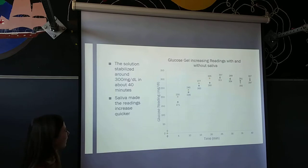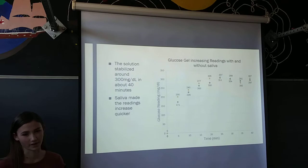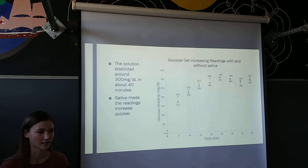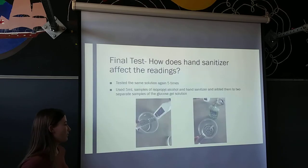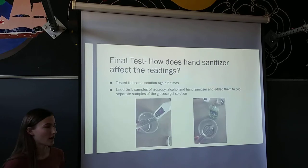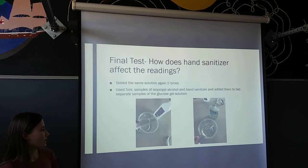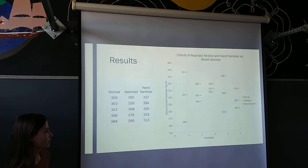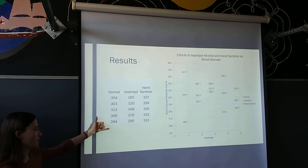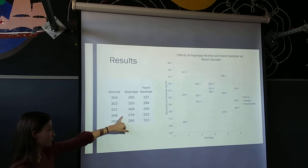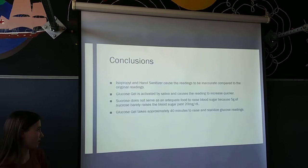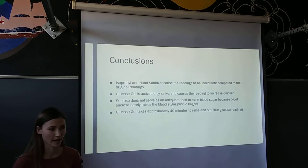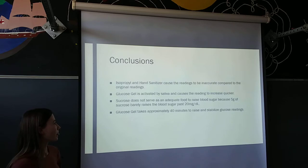You can see that at around 40 minutes the sugar readings stabilized around 300 milligrams per deciliter. I was able to use that 300 baseline to then look for a pattern with hand sanitizer. I added one sample of isopropyl alcohol and one sample of hand sanitizer to two of the same prepared solutions of glucose gel and water. The normal readings remained around that 300 baseline, while the isopropyl alcohol and the hand sanitizer varied from that 300 baseline.